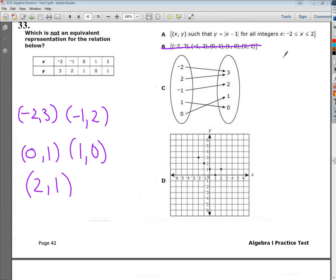What we're going to look for for d is to see if the graph matches. So at negative 2, it's up at 3. At negative 1, it's at 2. At 0, it's at 1. At 1, it's at 0. And at 2, it's at 1. So it's basically an absolute value scenario.